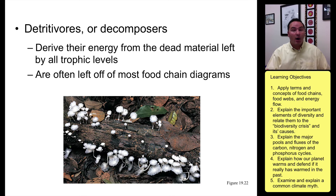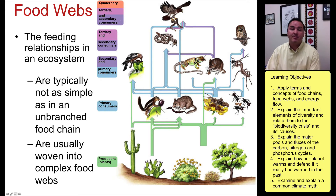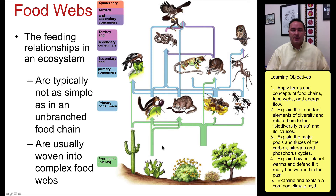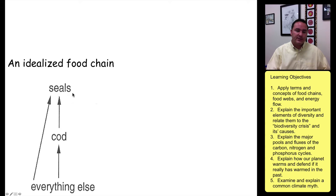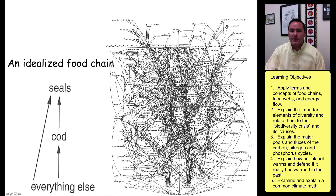In reality, food chains are much more complicated — what they really are is what we call food webs, where producers, primaries, and secondaries interact but some organisms can be both secondary and primary consumers. Some organisms eat both plant and animal life, making this a much more woven, complex network of different food chains. For example, the food web of seals and cod looks simple in a chain, but in reality cod interacts with many different species simultaneously.